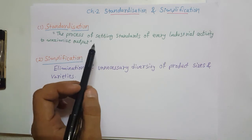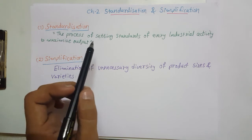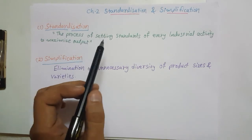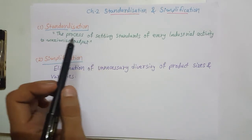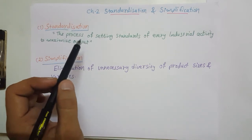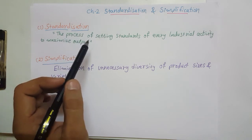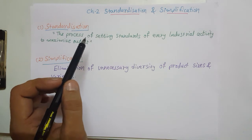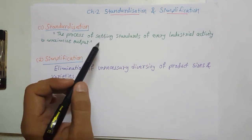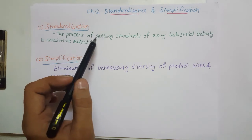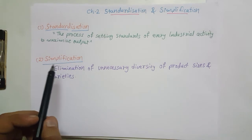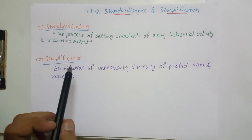The result of standardization is that excellent quality will come out, the performance of the worker will be very good, and there will be fixed types of products with fixed size and fixed characteristics. It will also lead to systematic production in the organization and optimum utilization of human as well as non-human resources.